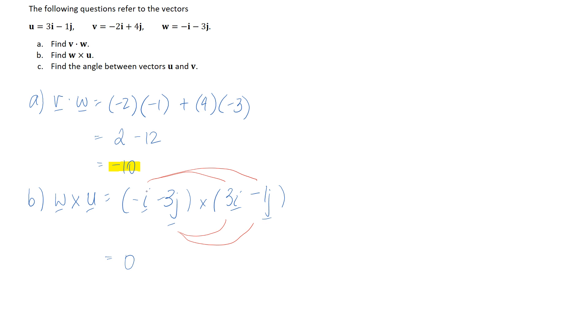So the next one I'll consider is negative i crossed with negative one j. So here we are going to get an actual something out that's not zero.